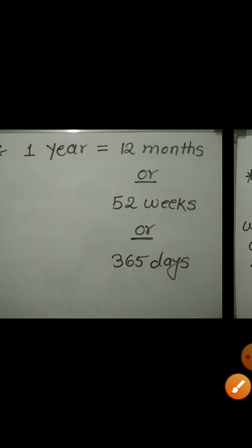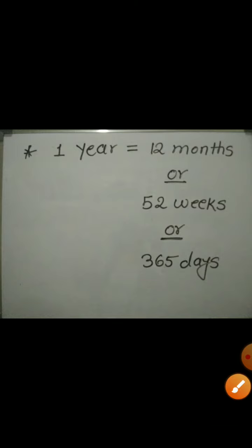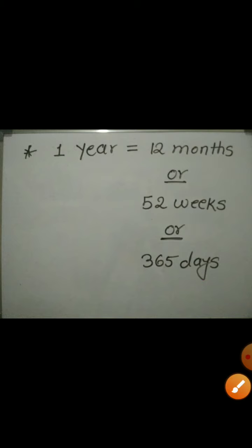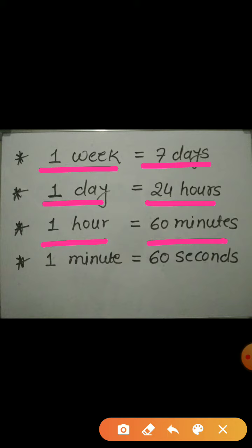Let's see the conversion of them. 1 year is equal to 12 months, or we can say 1 year is equal to 52 weeks, or 1 year is equal to 365 days. It means a year can be expressed in terms of months, weeks, and days as well. Now, 1 week is equal to 7 days, 1 day is equal to 24 hours, 1 hour is equal to 60 minutes, and 1 minute is equal to 60 seconds.